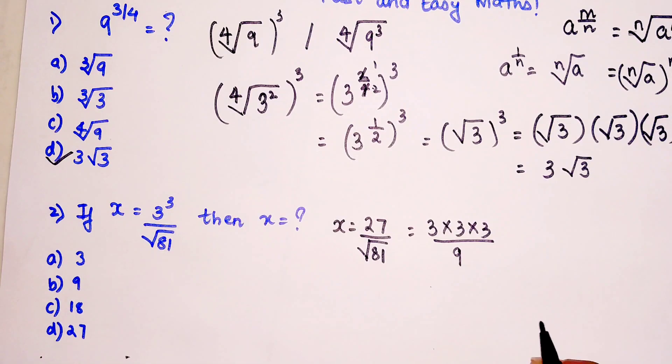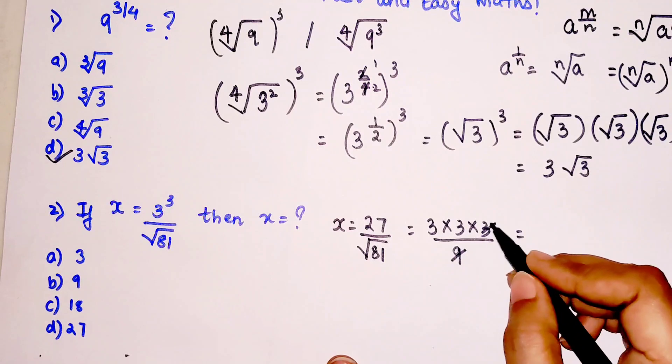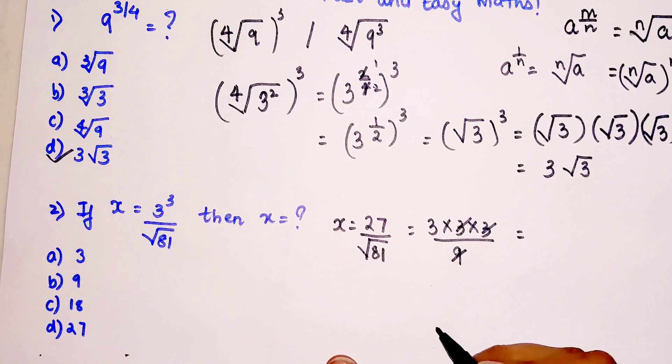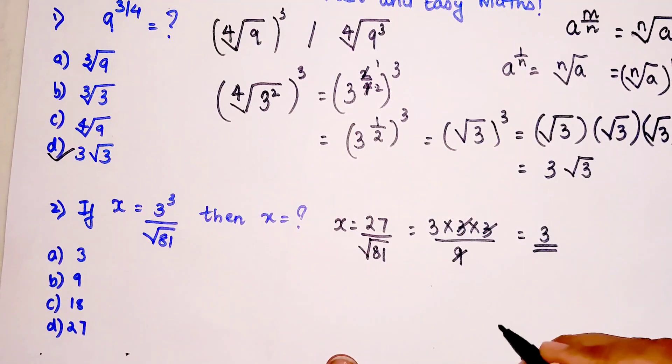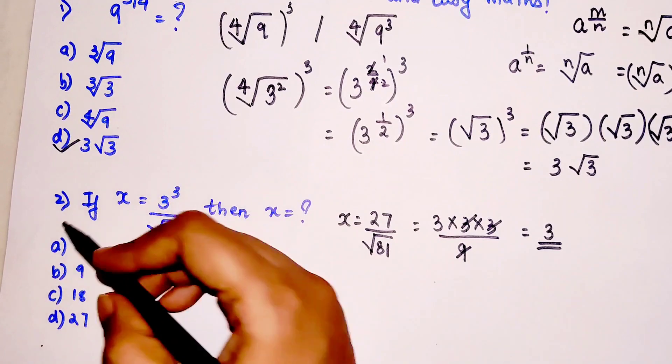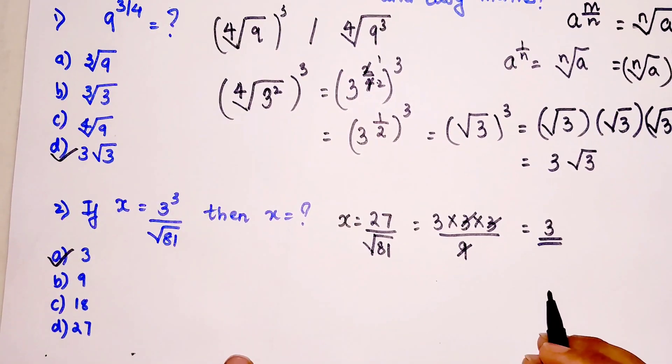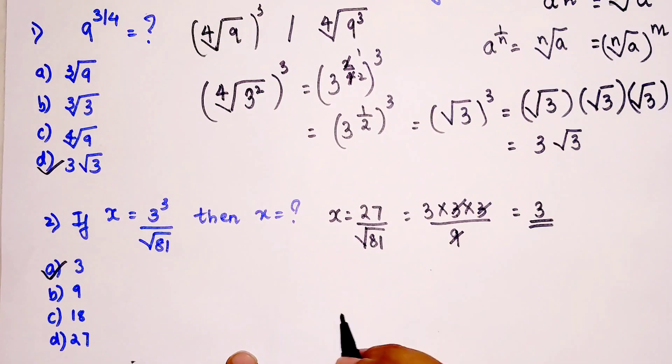So now what happens is: 9 - this 3 and this 3 will cancel because 3 times 3 gets you 9, and 9 will cancel with 9. So you are just left with one 3. So basically I can say that option A is my answer.